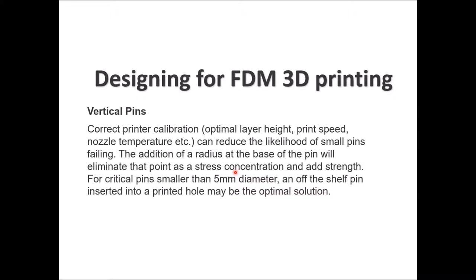Small pins may not print at all because there won't be enough material for newly printed layers to adhere to. To ensure vertical pins print correctly, you need proper printer calibration, the optimal layer height, and you need to tune the print speed, nozzle temperature, and other details — this reduces the likelihood of small pins failing. Adding a radius at the base of the pin will eliminate stress concentration points and add strength. If you have small pins less than 5 millimeters, the best solution is to bring an off-the-shelf pin and insert it in the hole, then ensure drilling of that hole manually.